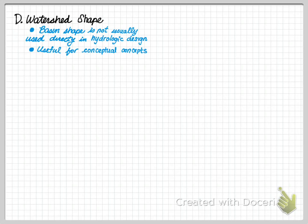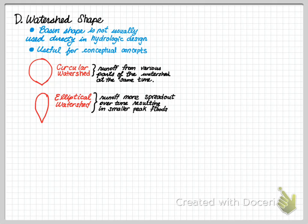Next, we have watershed shape. Basin shape is not usually used directly in hydrologic design. It is used significantly by hydrologists, watershed scientists, and those potentially outside of the engineering realm. However, it is very useful for conceptual understanding. We can have a circular watershed or an elliptical watershed, as shown in the schematic. Runoff from a circular watershed will come from various parts of the system at the same time, so the system will peak quicker. In an elliptical watershed, runoff is more spread out over time, resulting in smaller peaks.